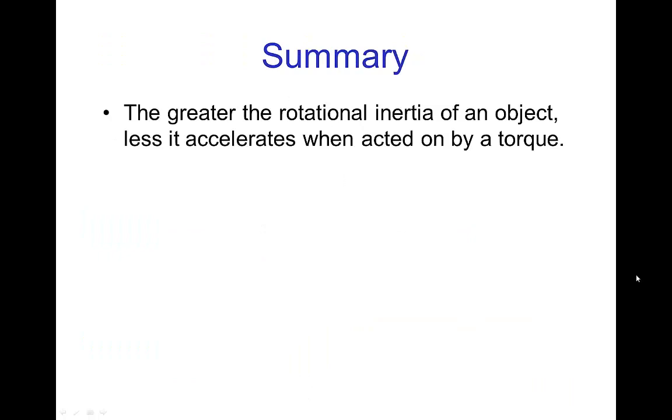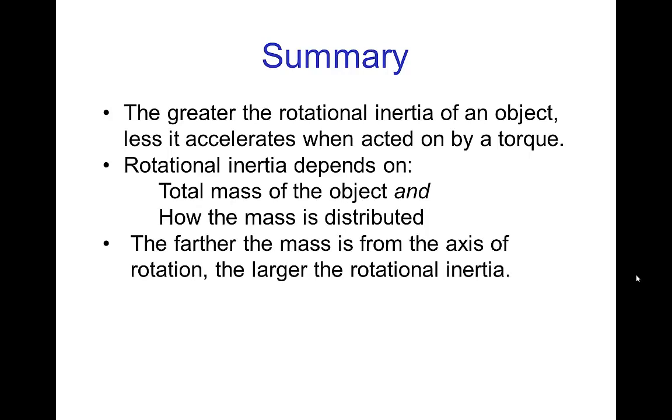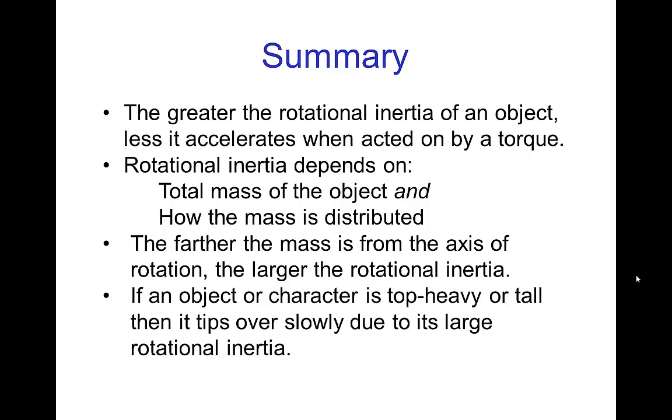In summary, the greater the rotational inertia of an object, the less it accelerates when acted on by a torque. Rotational inertia depends on the total mass of the object and how the mass is distributed. The farther the mass is from the axis of rotation, the larger the rotational inertia. As an example, if an object or a character is top heavy or simply tall, then it tips over slowly due to its large rotational inertia.